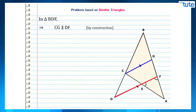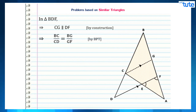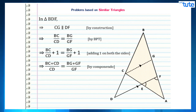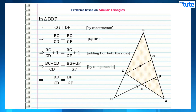Similarly, in triangle PDF, by construction CG is parallel to DF. By applying the basic proportionality theorem we get BC/CD = BG/GF. Adding 1 on both sides and using componendo, we get (BC + CD)/CD = (BG + GF)/GF. Now since BC + CD is nothing but BD, and BG + GF is nothing but BF, we get BD/CD = BF/GF.